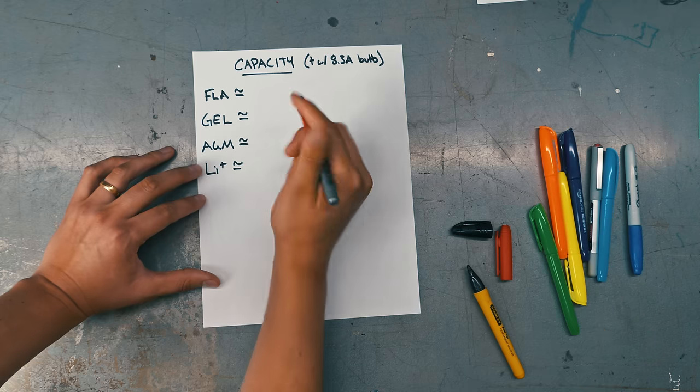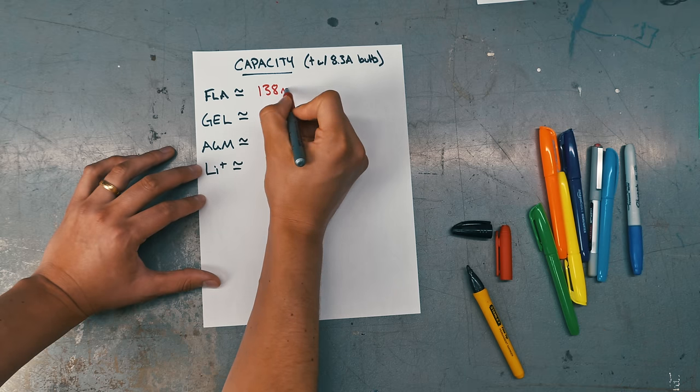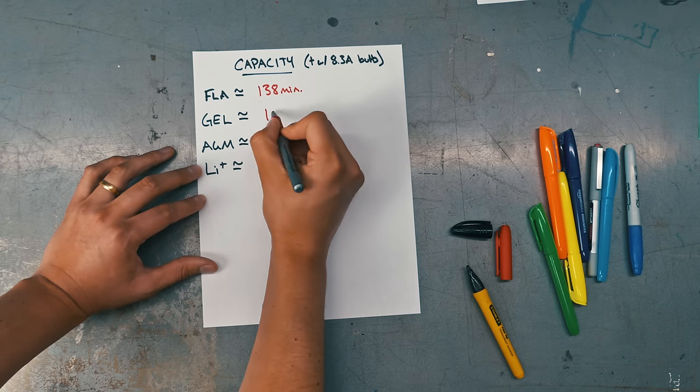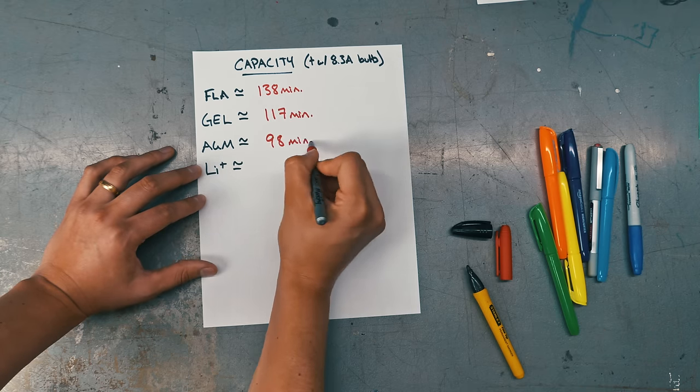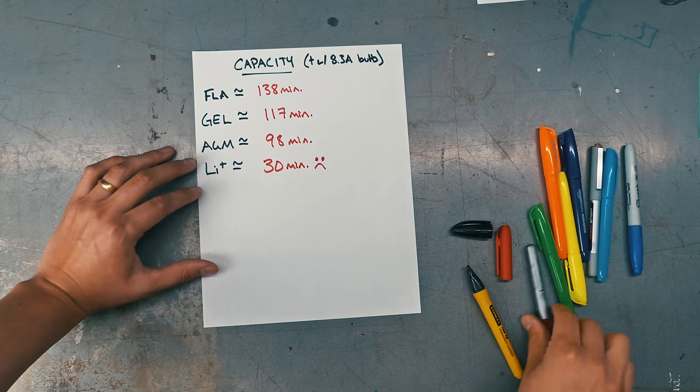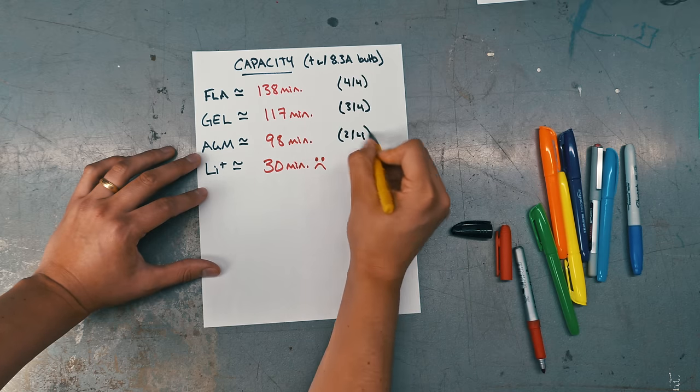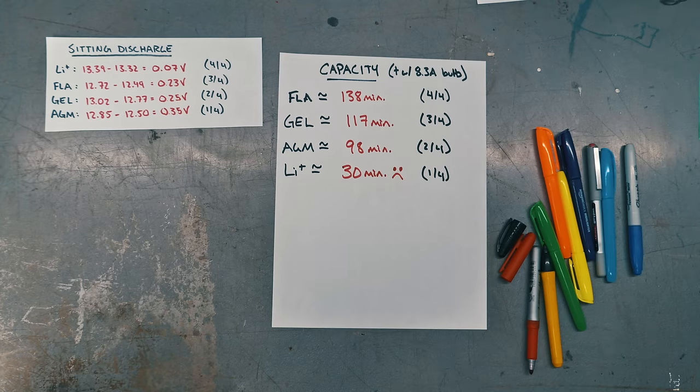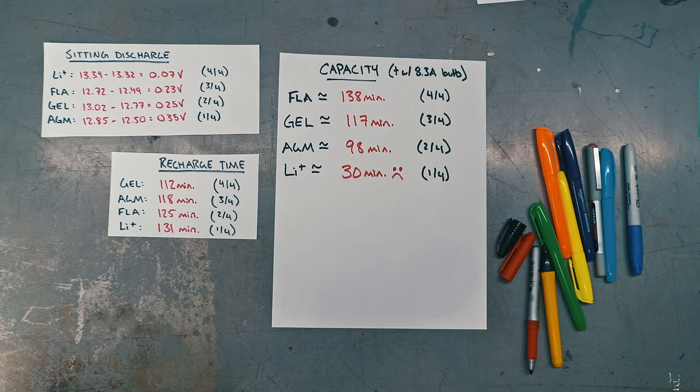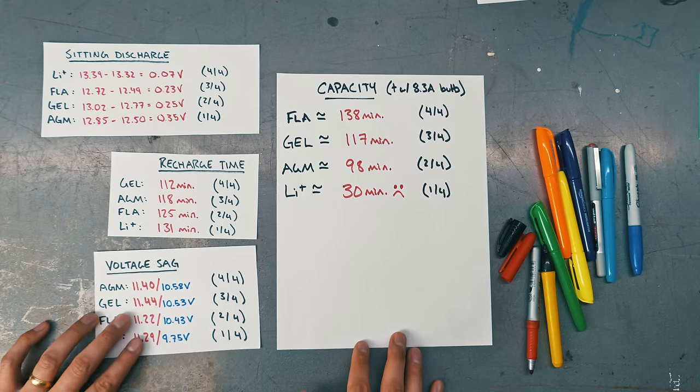Post-humously flooded lead acid proved the most heroic capacity, shortly followed by gel and AGM. The lithium equivalents are not at all equivalent. But recall that lithium had the slowest sitting discharge, gel the fastest recharge time, and AGM the smallest voltage sag.